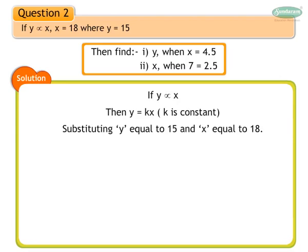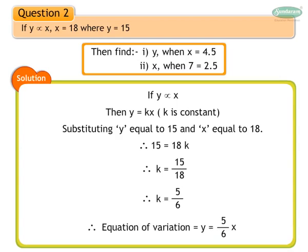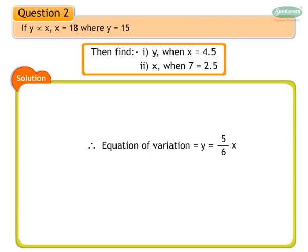Substituting y is equal to 15 and x equal to 18: 15 is equal to 18k. Therefore, k is equal to 15 upon 18, which simplifies to k is equal to 5 upon 6. Substituting the value of k in equation y is equal to k into x, the equation of variation is y is equal to 5 upon 6 times x.